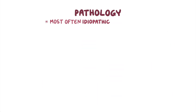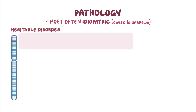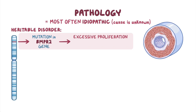PAH is most often idiopathic, which means that the cause is unknown. Occasionally, PAH can be a heritable disorder due to mutations in genes such as the BMPR2 gene. Without this gene working, there is excessive proliferation, or rapid reproduction, of the smooth muscle cells in blood vessels.